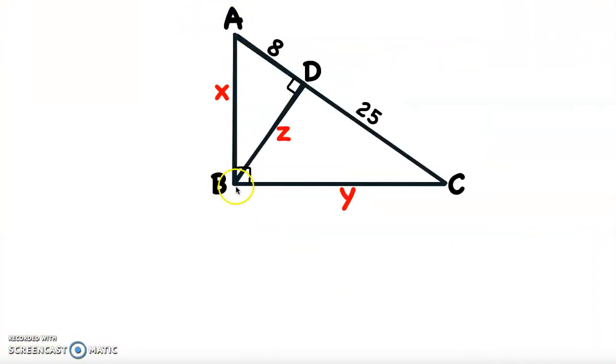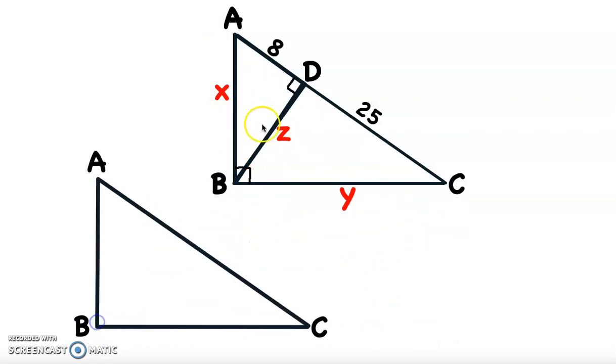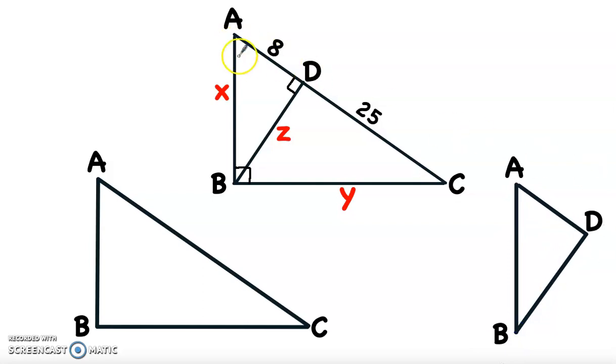Now let's take a look at the two triangles ABC and ABD. Angle A is common between these two triangles. We have here a right triangle and here another right triangle. Now we have two corresponding equal angles, then the third angle will be equal for sure.